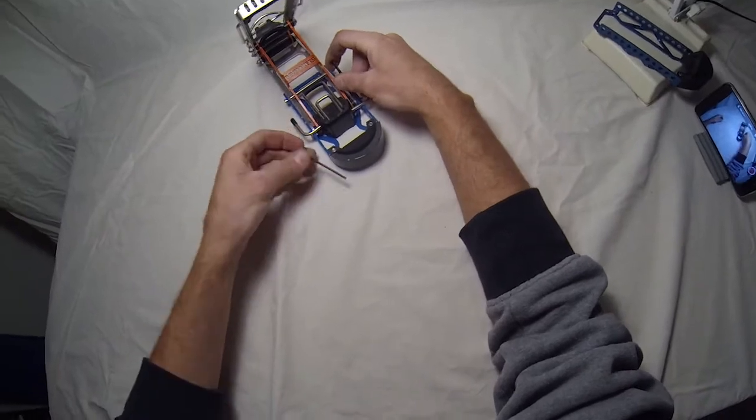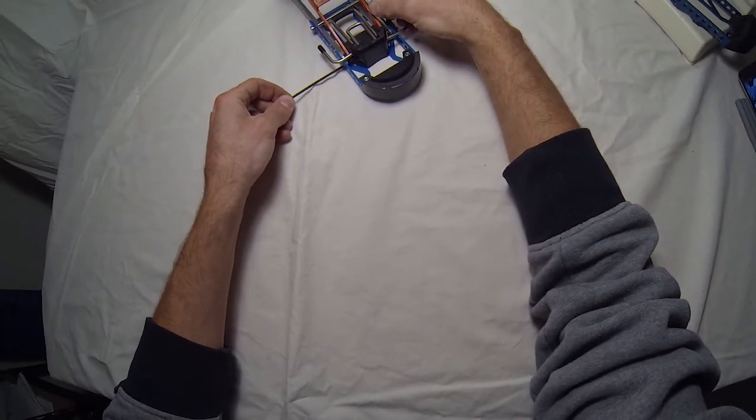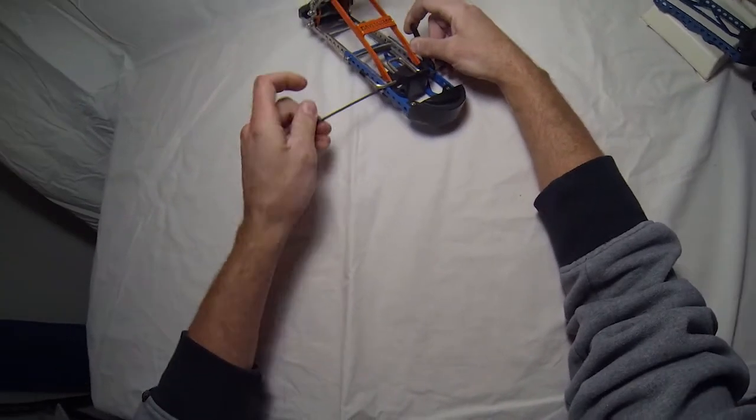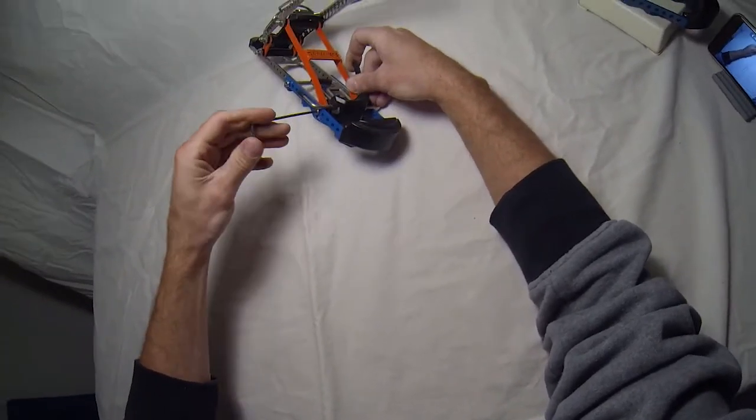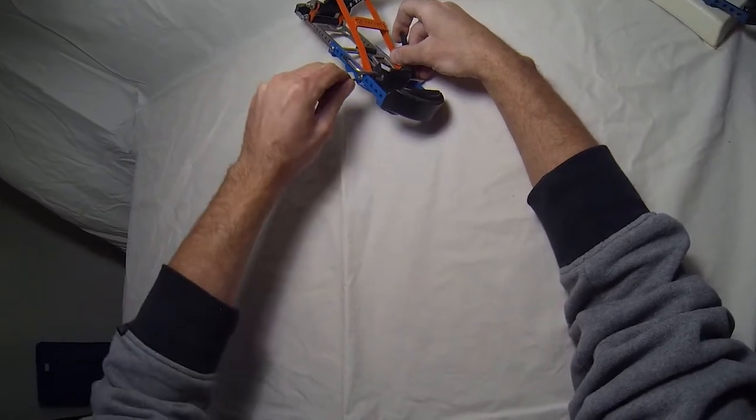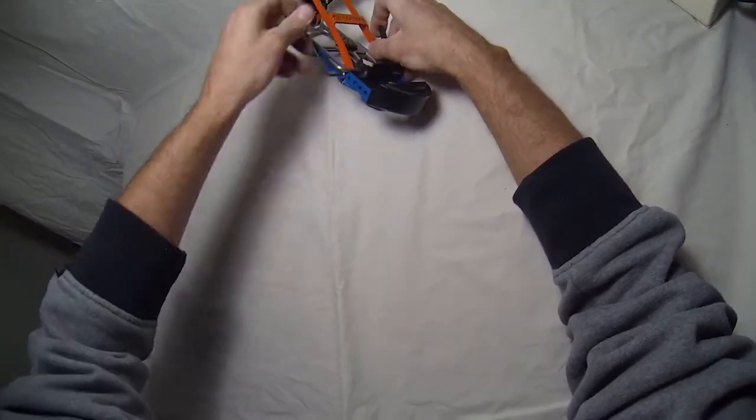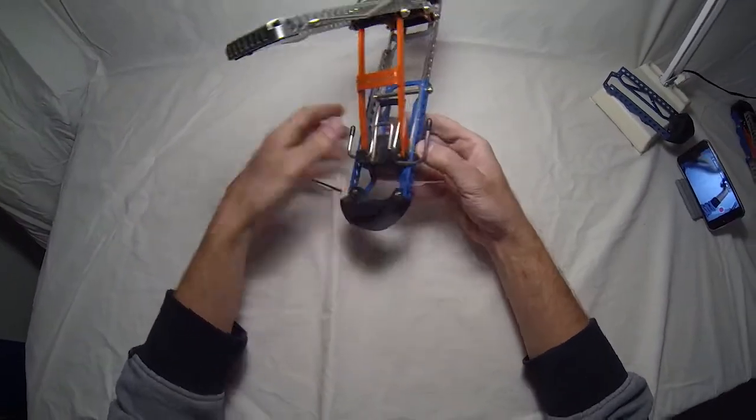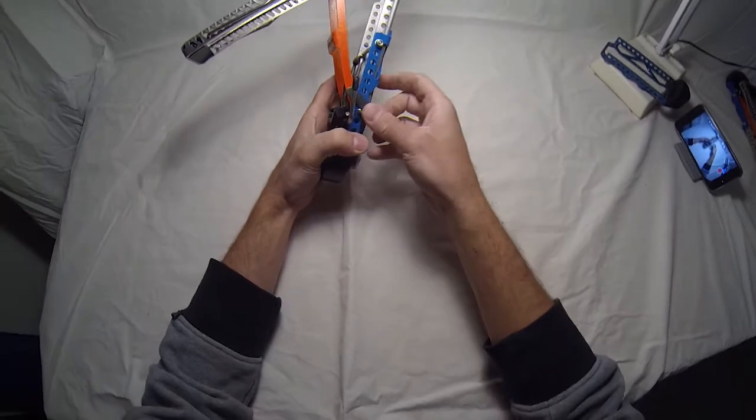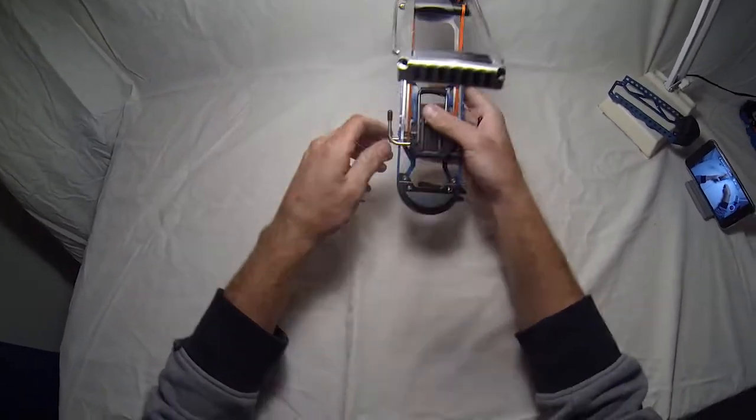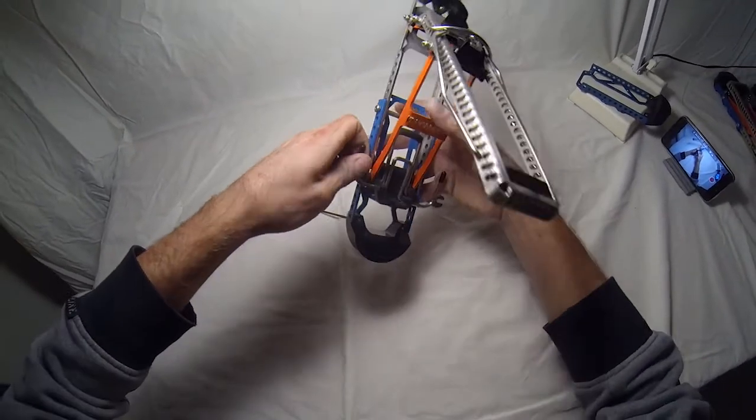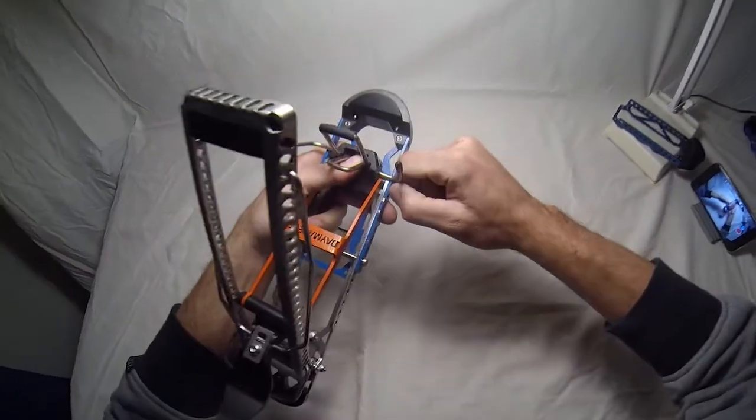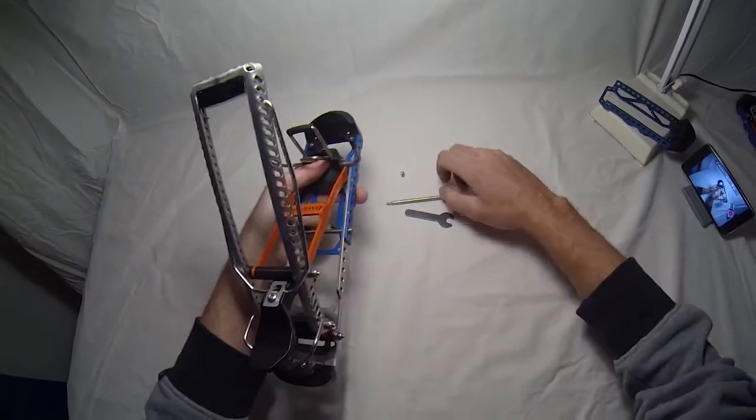So the first step here is to unbolt our heel screw and you just need to do the one that runs through the elevator block. And then, sometimes you kind of have to press these guys out. It's really in there.